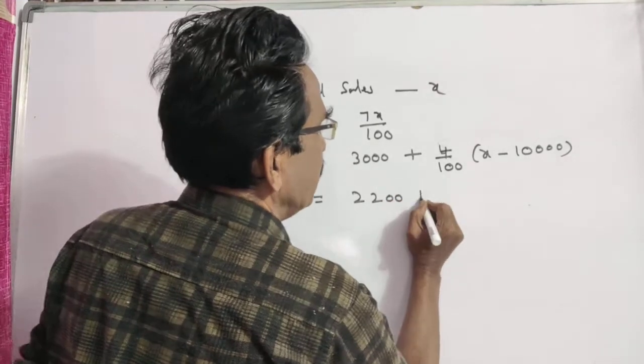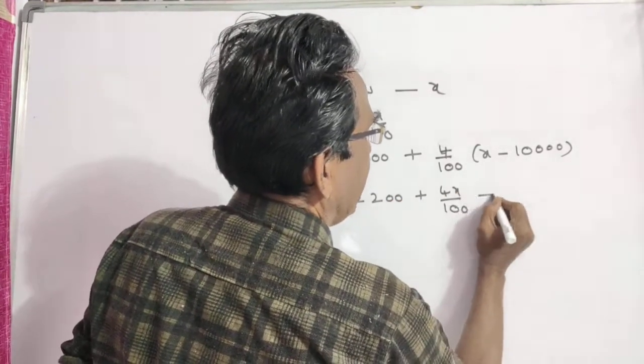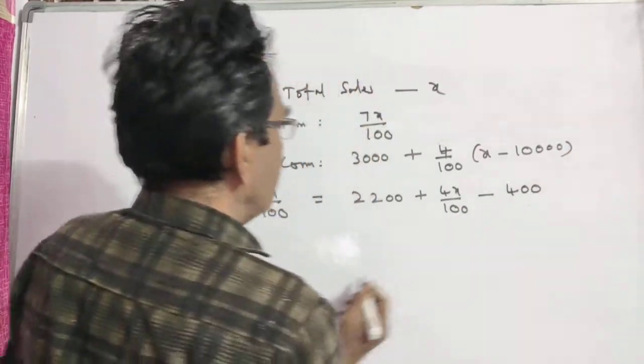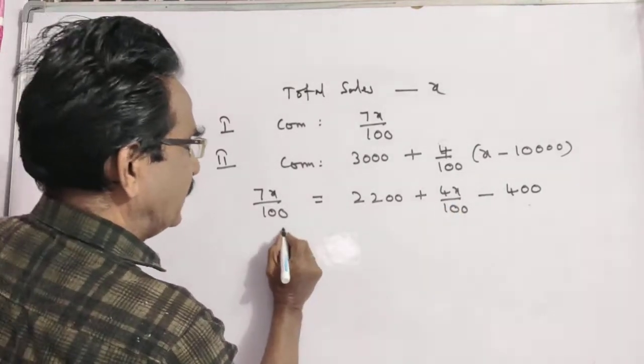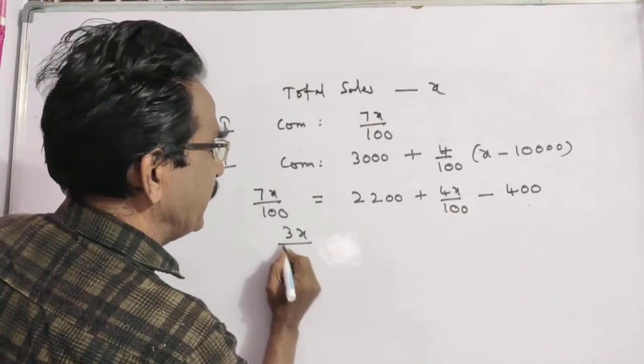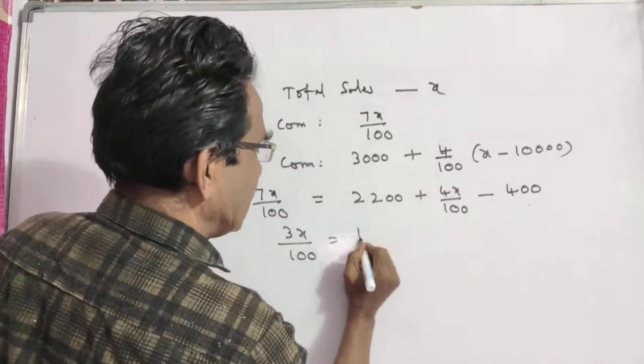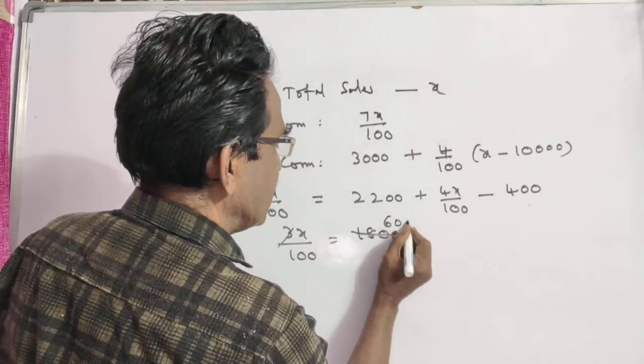2200 plus 4X by 100 minus 400. 7X by 100 minus 4X by 100, 3X by 100, is equal to 2200 minus 400. 1800.